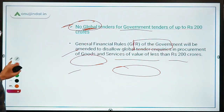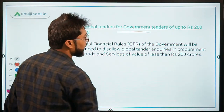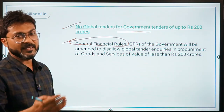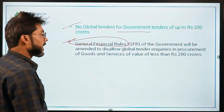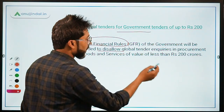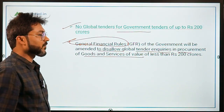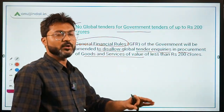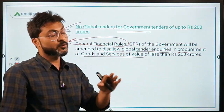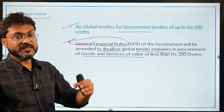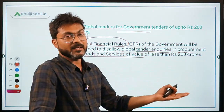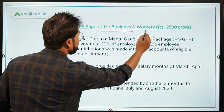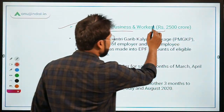Under amended General Financial Rules, global tender inquiries for procurement of goods and services valued less than ₹200 crore will not be allowed, protecting domestic businesses. For EPF support under the Pradhan Mantri Garib Kalyan Package, ₹2,500 crore was provided.